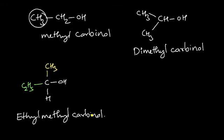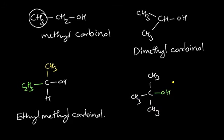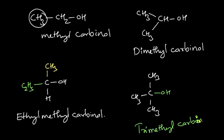If a molecule has all three hydrogens of carbinol replaced by CH₃ groups — giving (CH₃)₃COH — then all three alkyl groups are methyl, and therefore it is named trimethyl carbinol.